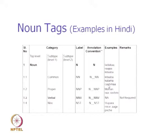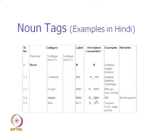Common nouns include Kitab (book), Kalam (pen), Chashma (spectacles) — tagged N_NN. Proper nouns are names like Mohan, Ravi, and Rashmi — tagged N_NNP. The symbol before the underscore is the top-level category and the sub-category is given after the underscore: NN is common noun, NNP is proper noun. N_NNV is verbal noun; in Hindi we do not see this phenomenon, but in Dravidian languages we see the occurrence of verbal nouns and will remark on this category later.